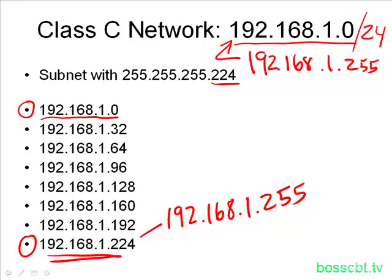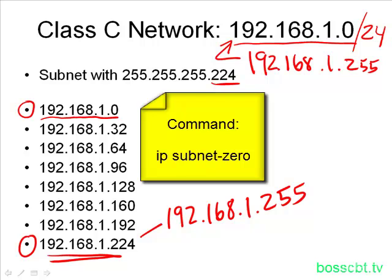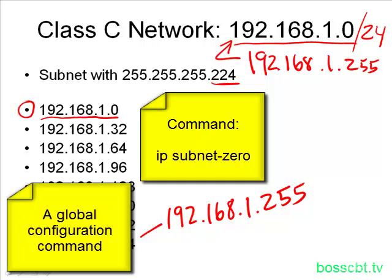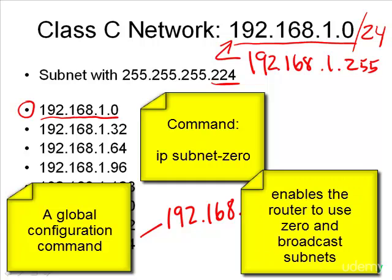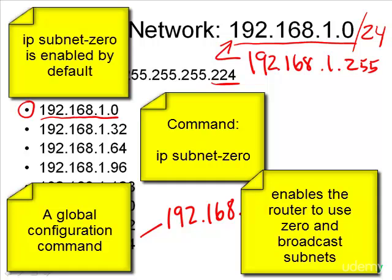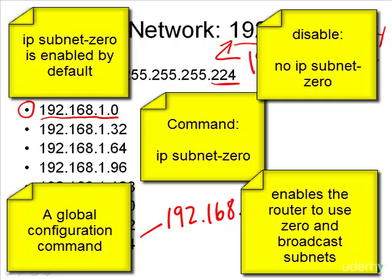There's a command in Cisco called IP subnet zero. This is a global configuration command, and it enables the router to distinguish between the subnets and the classful network when dealing with subnet zero and the broadcast subnet. These days, the IP subnet zero command is enabled by default. You can disable it by issuing the no IP subnet zero command, but generally you want to stick with the default so you can utilize all of the different subnets.